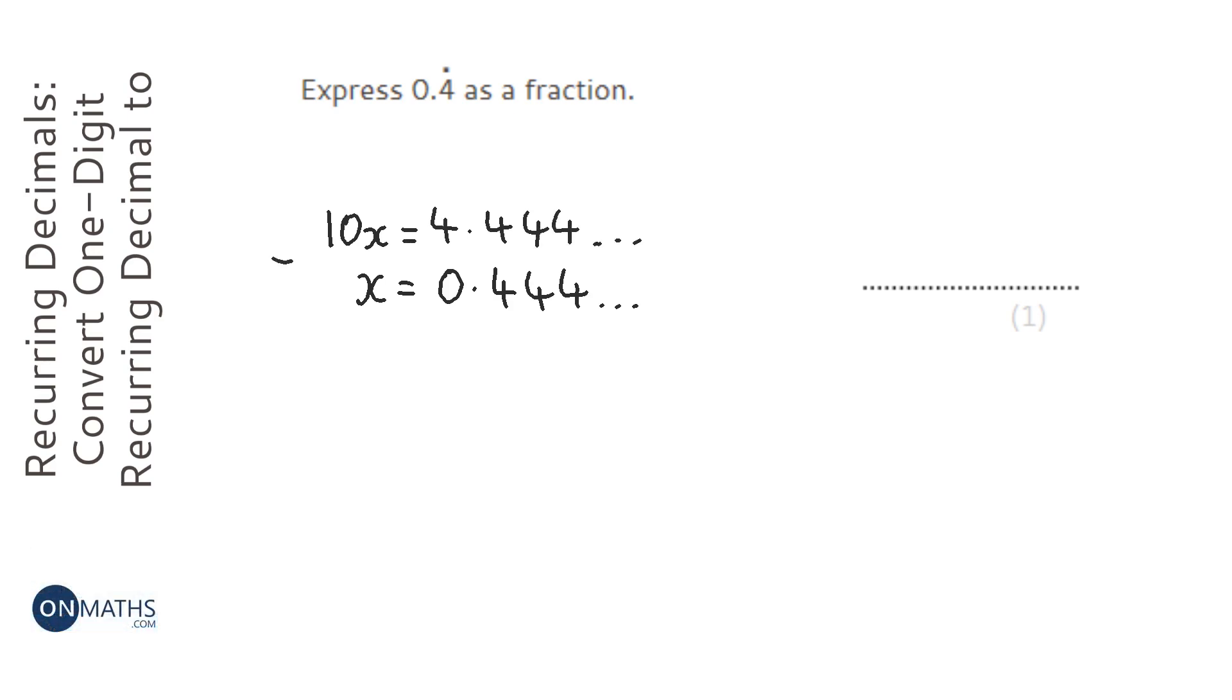And if we take away going downwards, we'll have 9x equals, and then 4 take away 0 is 4, and then all of the 4s to the right hand side will cancel each other out.